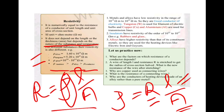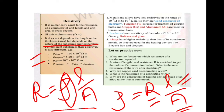The resistivity depends on the nature of the material. Insulators have the highest resistivity, then alloys, and pure conductors have the lowest resistivity. Metals and alloys have low resistivity in the range of 10 raised to power minus 8 ohm-meter to 10 raised to power minus 6 ohm-meter, so they are good conductors of electricity.